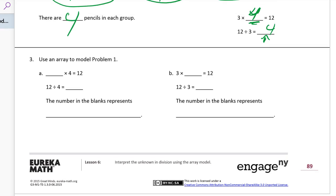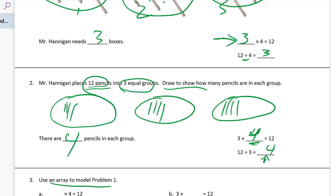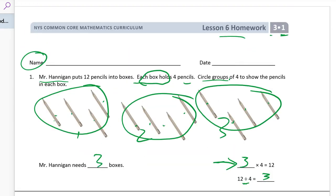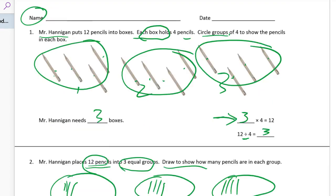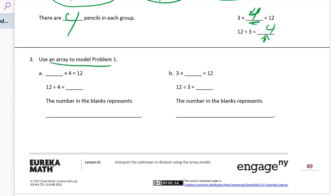And now we have use an array to model problem one. Let's go back to problem one and look at it. Here it is. He put 12 pencils into boxes, and each box holds 4 pencils. So our array is going to look like this. We're going to have 4 pencils. There's a box.